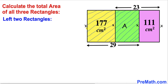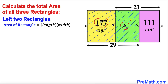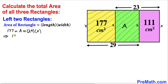Each of the corresponding sides is also x centimeter. Now let's focus on the two left rectangles that are shaded. Using the area formula — area equals length times width — the total area of this shaded region is 177 plus A, which equals 29 times x. Let's call this Equation 1.